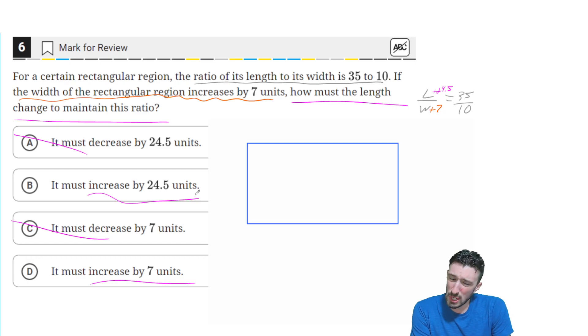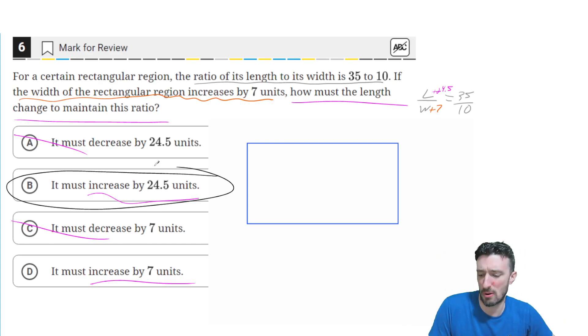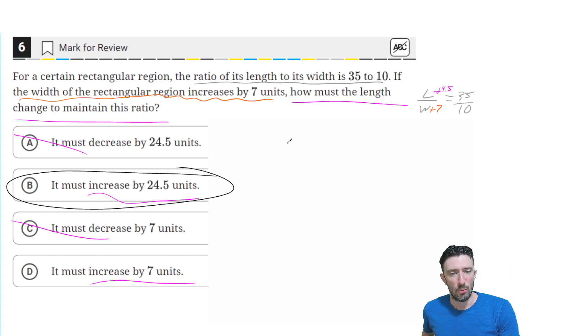Now that's a little tricky to confirm. We've got our best guess here, but we really kind of should think about how we would confirm this. Well, I'll tell you how we're going to confirm it. We're going to remember that the original equation that they gave us is L over W equals 35 over 10.